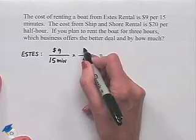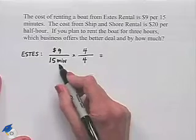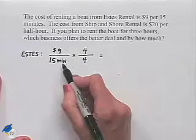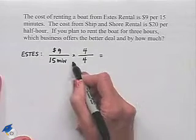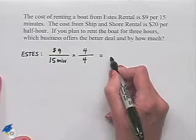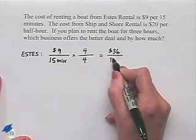But if we multiply the denominator times four, we also have to multiply the numerator by four. Now, you may be able to figure this out without looking at the calculation, but in order to understand the calculation, notice that what you're doing is you're multiplying times one, and therefore you're ending up with an equivalence. Here we end up with $36 for one hour.